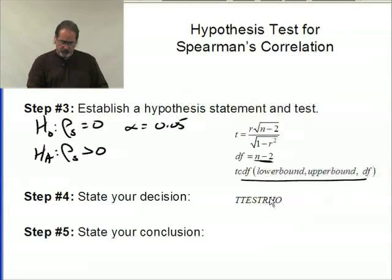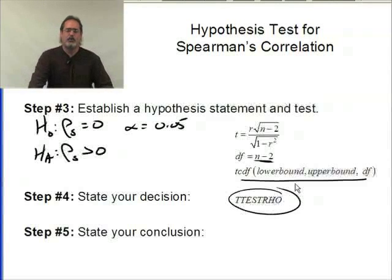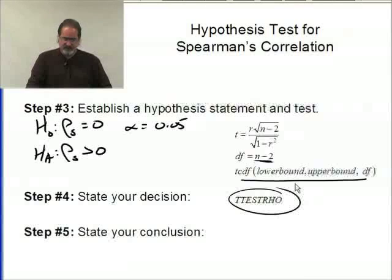But there's also a program called T-test-Row that you can run. Now the program T-test-Row really doesn't care if it uses Spearman's or Pearson's correlation. It makes no difference, because the input—this equation right here makes no difference. It doesn't know if you're using Pearson's or Spearman's. So you could do this by hand using this method, but let's go to the calculator and run T-test-Row.